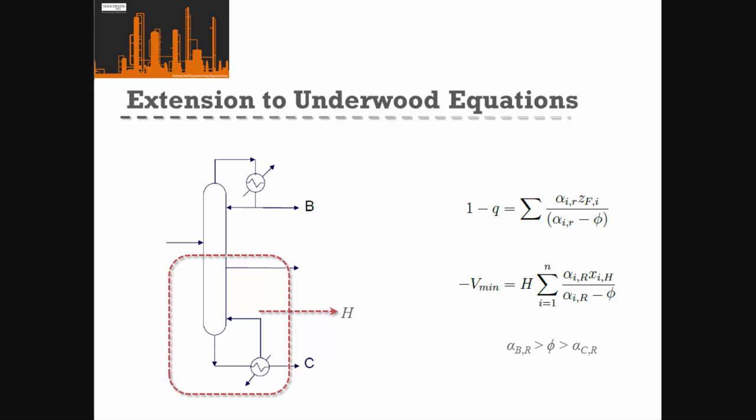We can find our minimum vapor flow rate, which we can put into performance indicators to check that distillation column and how that fits into the selections we've made.